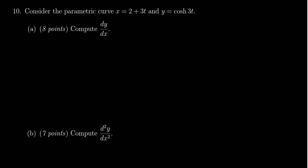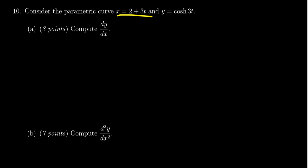In this video, we provide the solution to question number 10 for practice exam 3 for Math 1220, in which case we're given a parametric curve: x equals 2 plus 3t and y equals cosh of 3t.